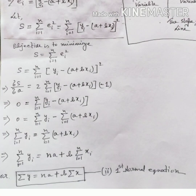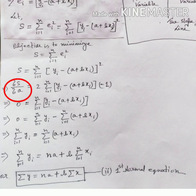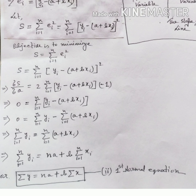To minimize S, I apply partial derivatives. Taking the derivative with respect to a: ∂S/∂a = 2 · Σ(i=1 to n) (y_i − (a + bx_i)) · (−1). By the chain rule, the power comes down and since we differentiate with respect to a, the term −a gives a derivative of −1, so we get 2 · Σ(i=1 to n) (y_i − (a + bx_i)) · (−1).